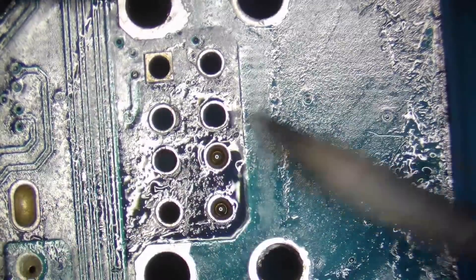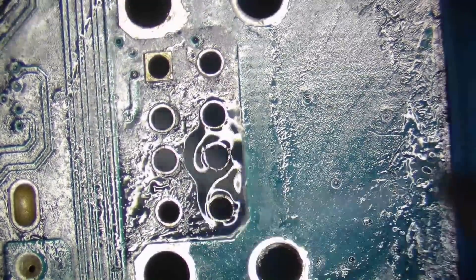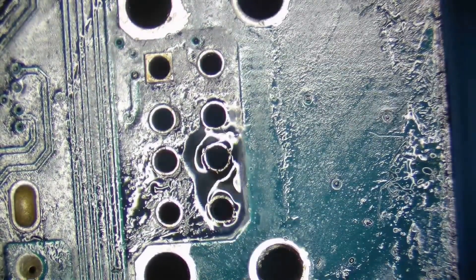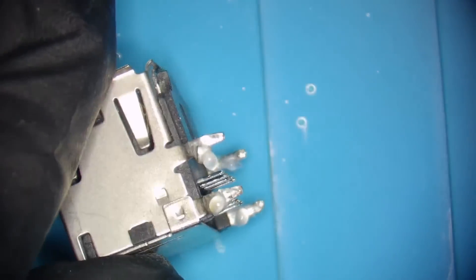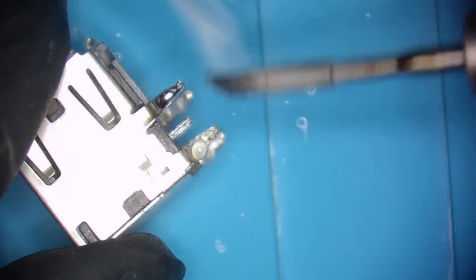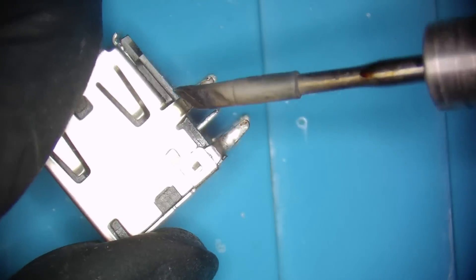When you've removed as much solder as possible, you can use a Q-tip and some isopropyl alcohol to clean the burnt flux residue. The next step applies only if you're going to be using the connector you just desoldered, so you need to clean all the pins from bigger solder blobs.